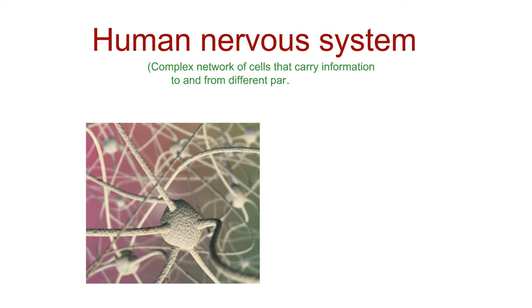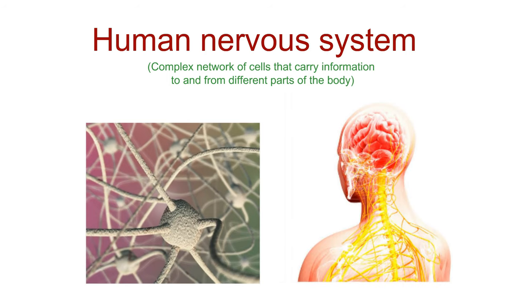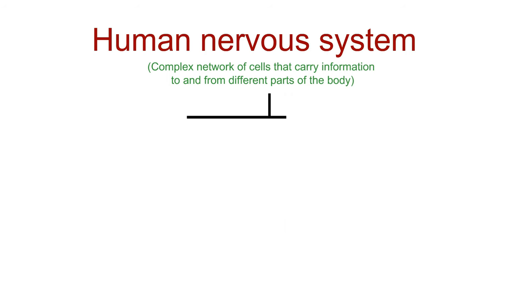The human nervous system is a complex network of cells that carry information to and from different parts of the body. It is divided into two main parts: the central nervous system and the peripheral nervous system.